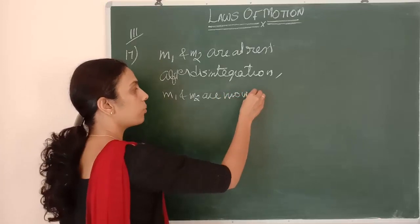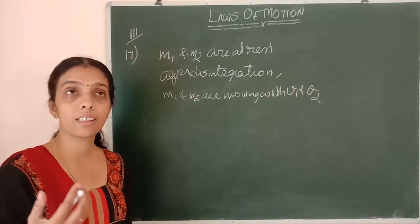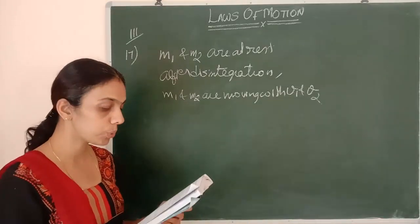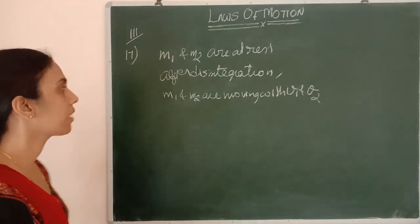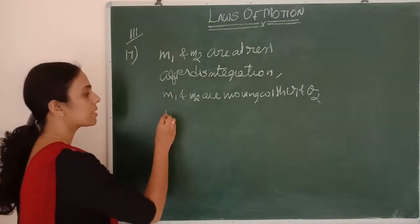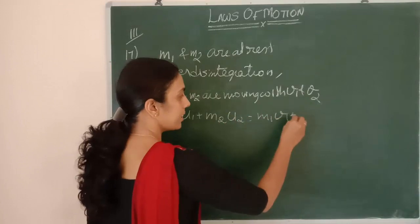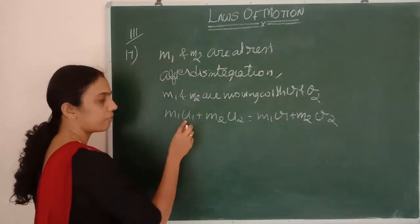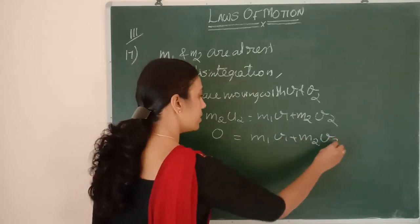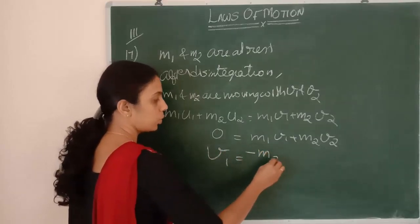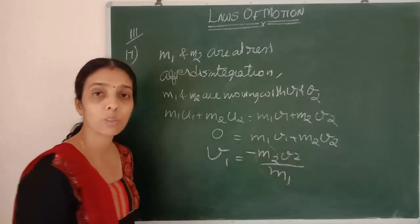After disintegration, m1 and m2 are moving with velocities v1 and v2. We need to show that one is moving in the opposite direction to the other. Applying the law of conservation of momentum: m1*u1 + m2*u2 = m1*v1 + m2*v2. Since initially they were at rest, u1 and u2 are zero, so 0 = m1*v1 + m2*v2.